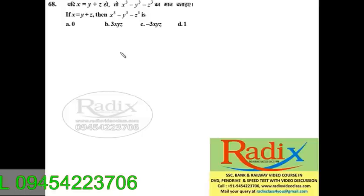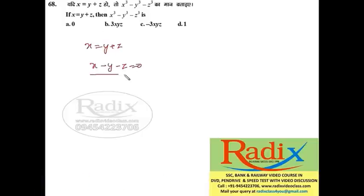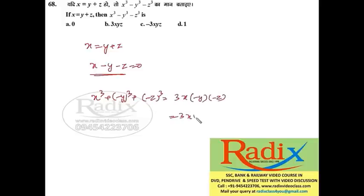Question 68: Given x = y + z, we can write x − y − z = 0. Using the identity: if a + b + c = 0, then a³ + b³ + c³ = 3abc. So x³ + (−y)³ + (−z)³ = 3·x·(−y)·(−z) = 3xyz. Therefore x³ − y³ − z³ = 3xyz. Answer is option B.